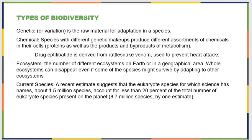There are different types of biodiversity worth reviewing. Genetic diversity references the different types of raw materials for adaptation in a species. Chemical diversity comes from the idea that species have different genetic makeups that allow them to produce different assortments of chemicals in their cells. For example, we can actually derive medication from rattlesnake venom and use it to prevent heart attacks in people with very specific heart conditions. Some rattlesnakes produce more of that particular protein than others, even within the exact same species — demonstrating chemical diversity within a group.